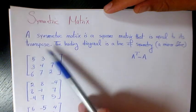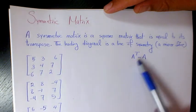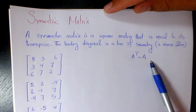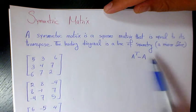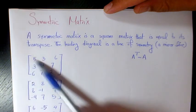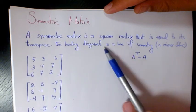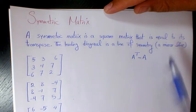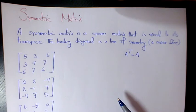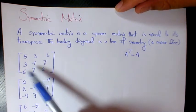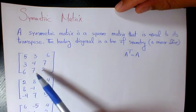It means that the transpose of A equals to the matrix A, or original matrix, which means that the leading diagonal, which starts from left up to right down, is a line of symmetry or mirror line. For example, here we have a 3 by 3 matrix.